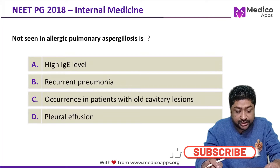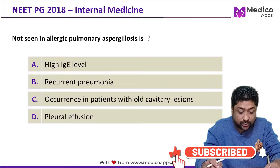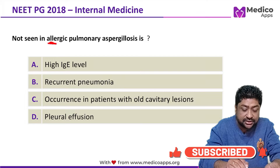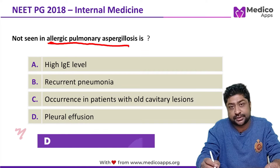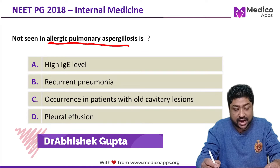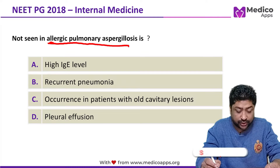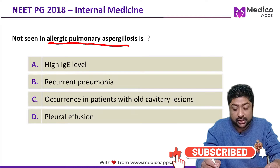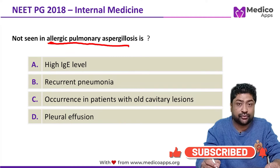This question appeared in NEET PG 2018. The question says: 'Not seen in allergic pulmonary aspergillosis is?' and the options are: high IgE level, recurrent pneumonia, occurrence in patient with old cavitary lesions, and pleural effusion.